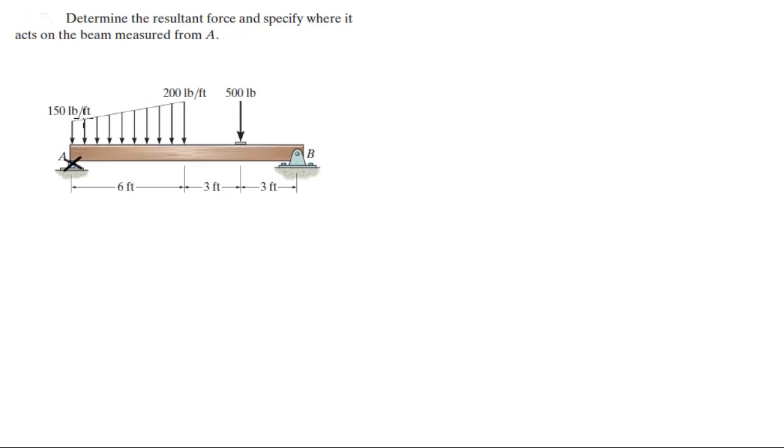This distributed load has two shapes. It has a rectangle, this rectangle at the bottom, and a triangle at the top. So you know that the rectangle acts at the center, let's call it FR for rectangle. And the triangle acts about right here, let's call it FT.